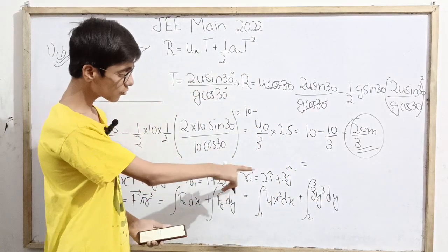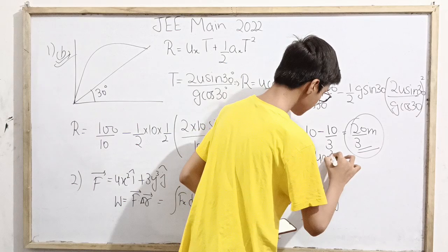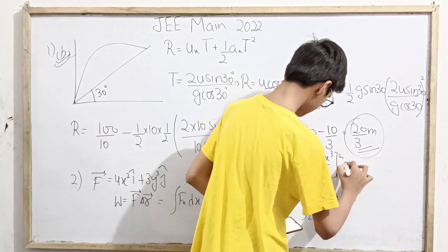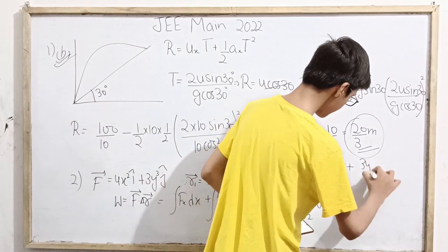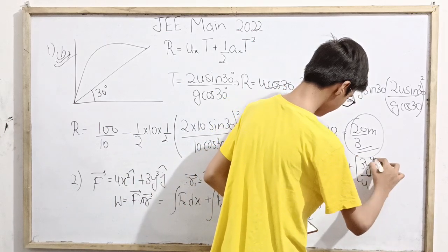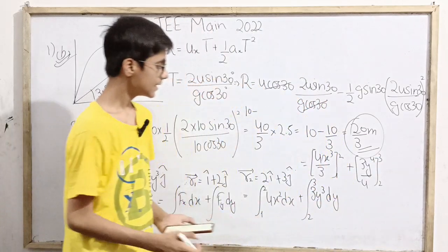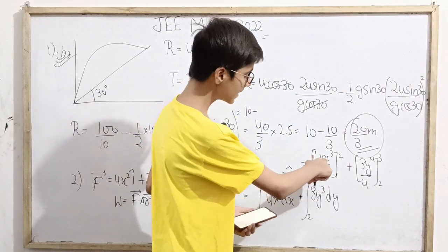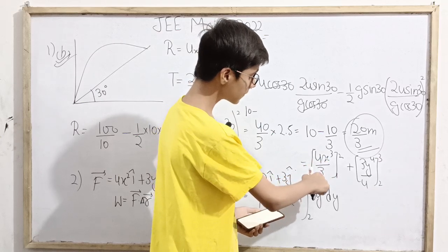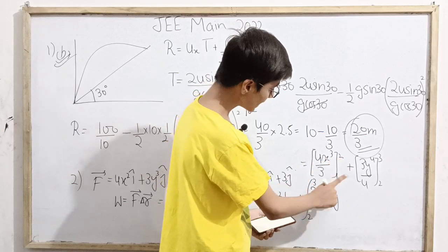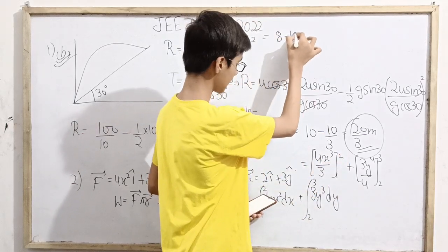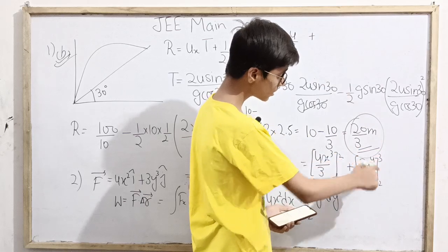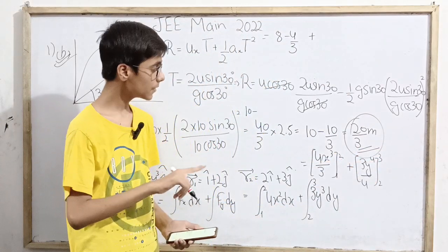Simply writing this: 4x cubed by 3 from 1 to 2, plus 3y to the power 4 by 4 from 2 to 3. Now we just do simple normal calculations. This becomes: putting 2 first, that's 8, times 4 gives 24, divided by 3 gives 8. Then 8 minus 4 over 3.